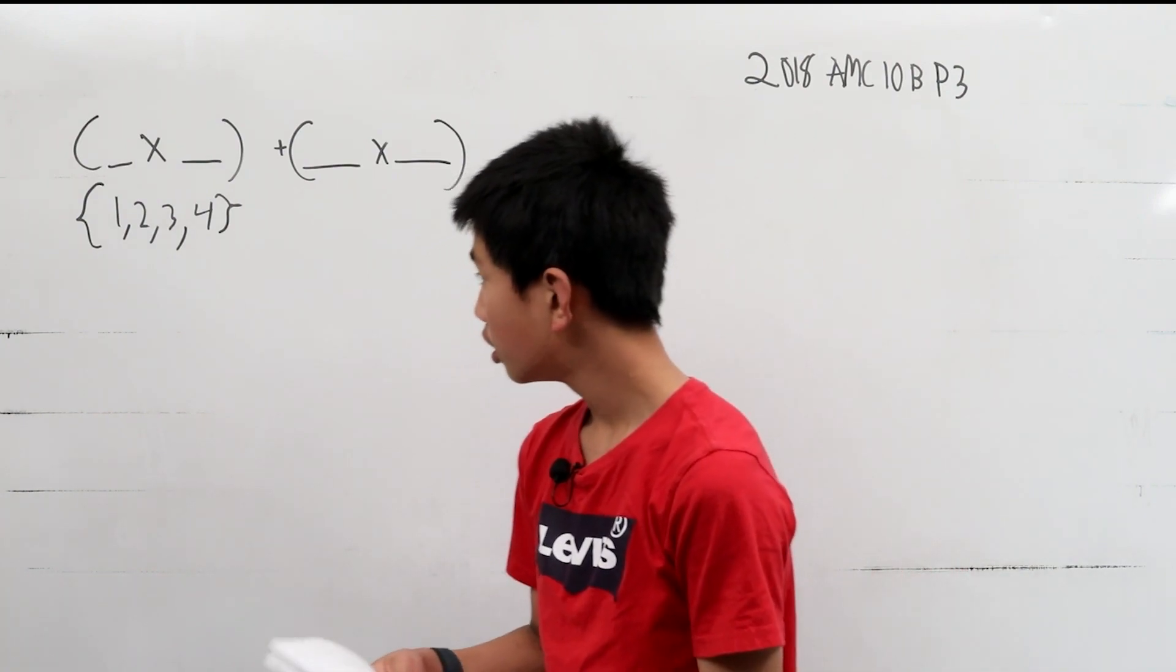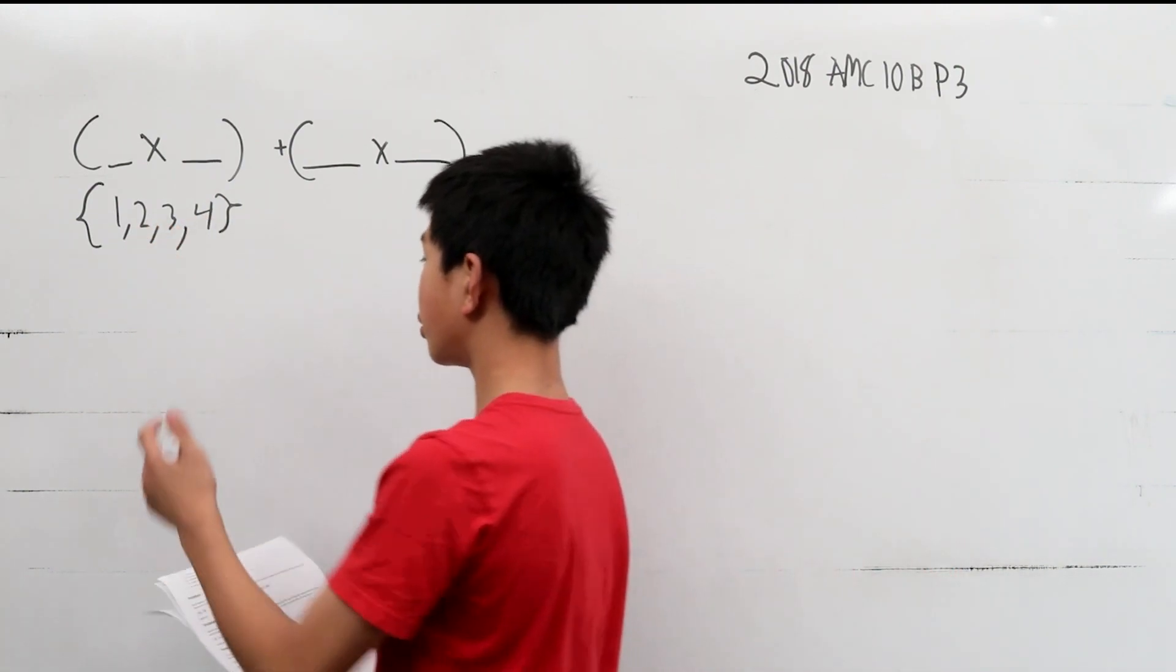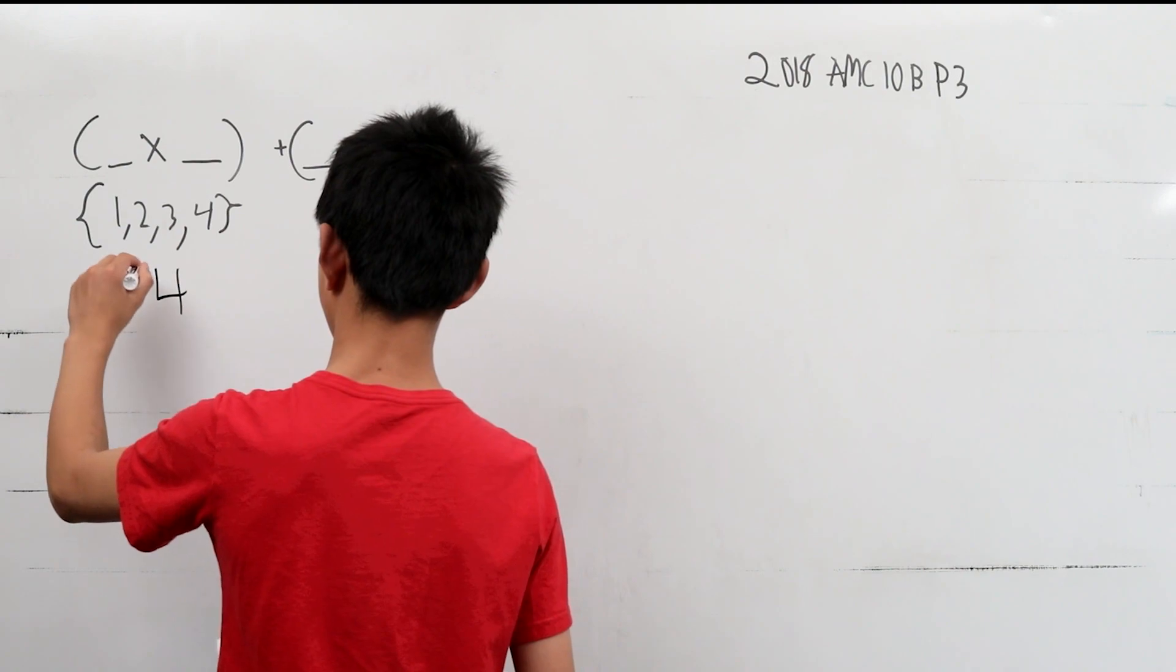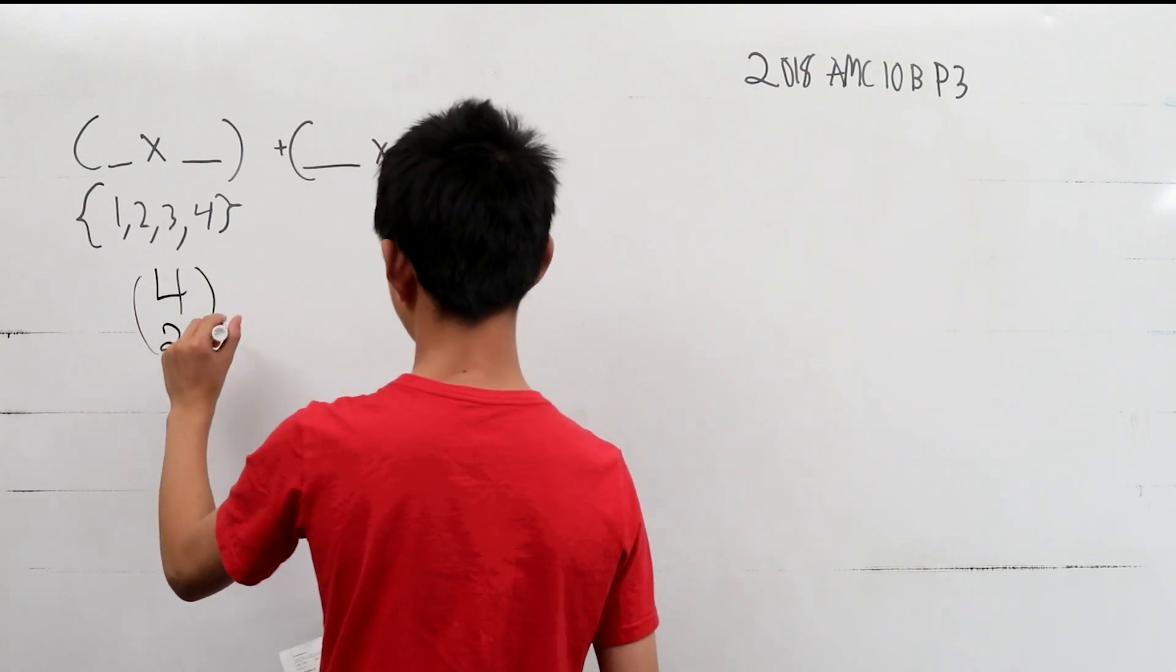So, since there's 4 digits here, we can do 4 choose 2 for it to go into each one.